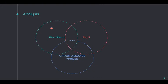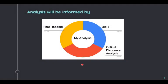What we've covered so far: we've done first read, we've done big five, and now we're getting into critical discourse analysis. They can be independent — you can do them by themselves and you'll still have a nice analysis. You can do them together and still have a nice analysis. Let's assume we're going to do all three types of analysis as steps in developing a strong argument.